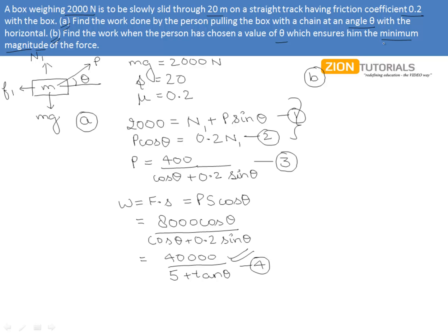Now, we have to find out the θ which ensures him the minimum magnitude of force. So we will be actually differentiating the denominator cosθ plus 0.2 sinθ with respect to θ and putting it to value 0.